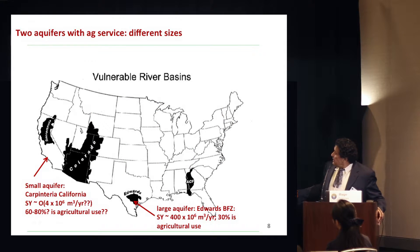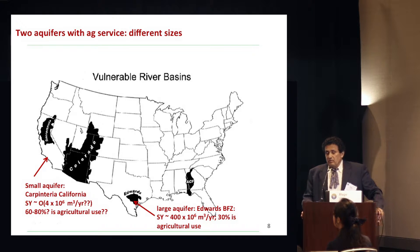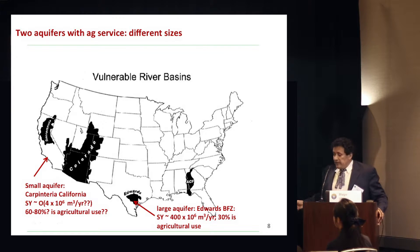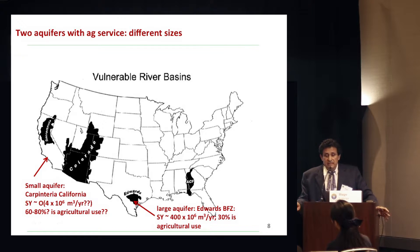I'll be speaking about two aquifers. One is a small aquifer in south-central California; my estimate of its safe yield is on the order of about 4 million cubic meters per year. The other is a larger aquifer in Texas — the Balcones Fault Zone Edwards Aquifer — where I have better estimates on the order of about 400 million cubic meters per year. So there is roughly a 100-fold difference in size as measured by safe yield.